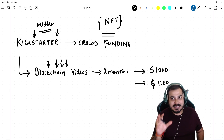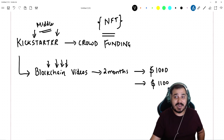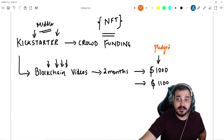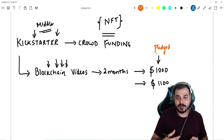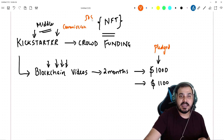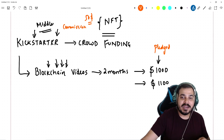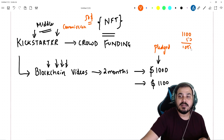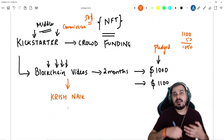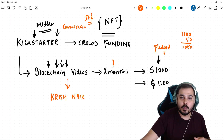We already got $1,100, which means we crossed the pledged amount. From the crowdfunding I could get that amount. Now what Kickstarter will do is take their commission — let's consider they take around $50 — and the remaining money, which is $1,100 minus $50, that is $1,050, has now been transferred to Krishnayak so that he can make his videos about blockchain and upload that course content within two months.